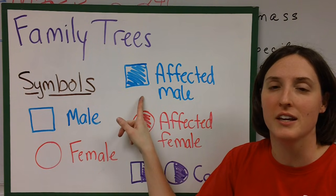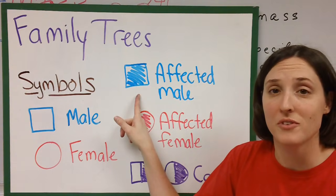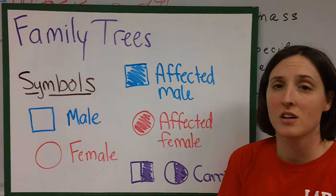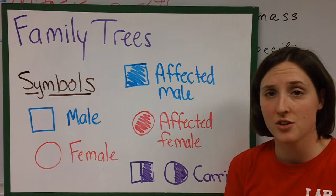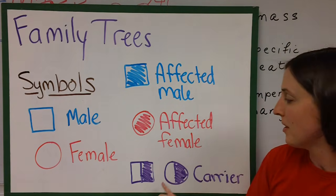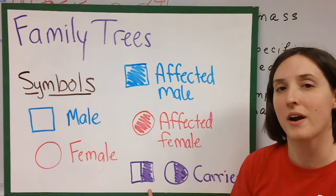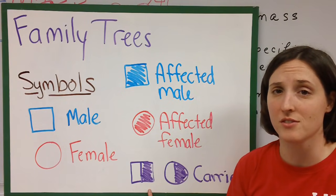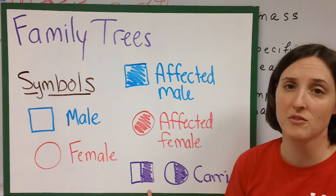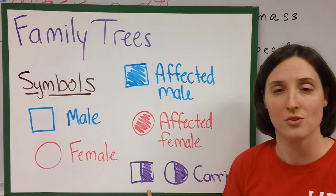Say we're looking at hemophilia — this person would have hemophilia, and so would this person. We can also show that someone's carrying a trait but doesn't actually have that particular trait by shading in half of their circle or their square. We call these people carriers. They don't have whatever gene we're looking for, but they're carrying it and they may give it to the next generation of children.